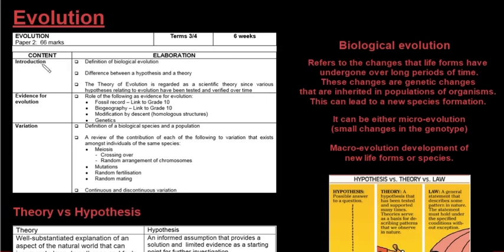In this video we'll be looking at evolution, found in paper 2, consisting of around 66 marks, so it's quite a big chapter. We'll be specifically looking at the definition for biological evolution, the difference between a hypothesis and a theory, the theory of evolution, the evidence for evolution, and what leads to variation.